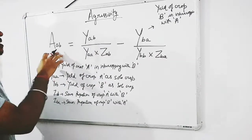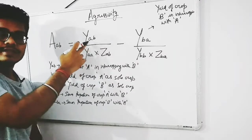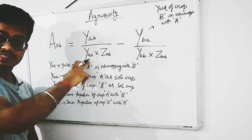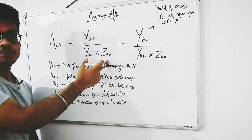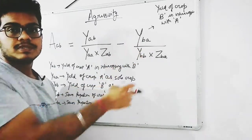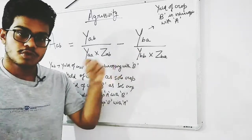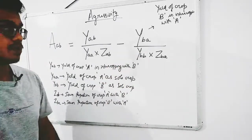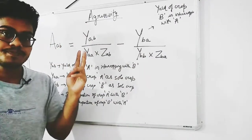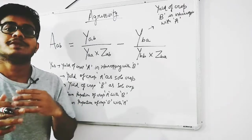So the aggressivity of crop A to B is equal to the yield of crop A in the intercropping system divided by the multiplication of the yield of crop A as a solo crop with its sown proportion, subtracting the yield of crop B in the intercropping system divided by its yield as a monocrop multiplied by the sown proportion of crop B. The aggressivity value obtained determines whether the crops are equally competitive, more competitive, or less competitive.